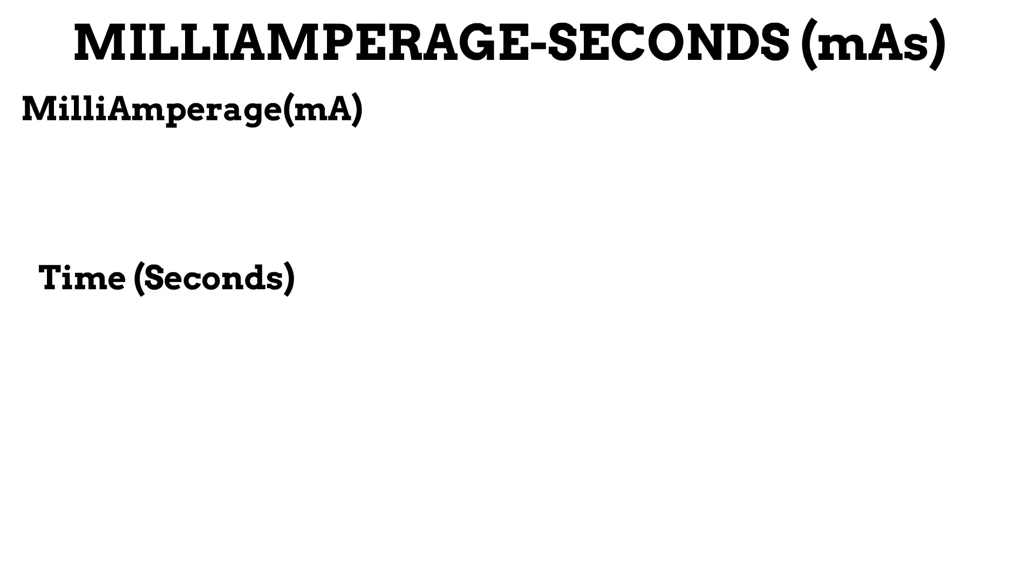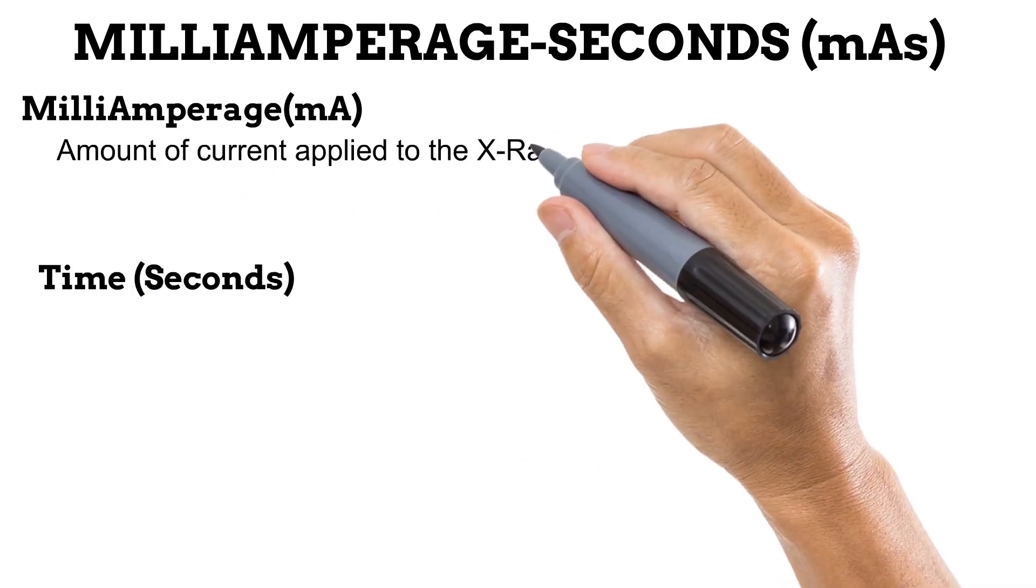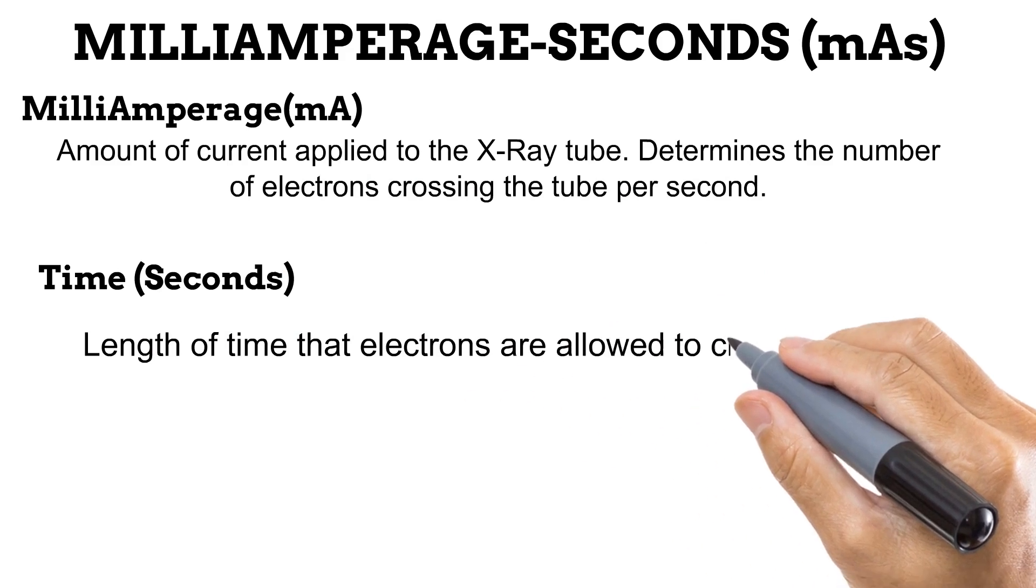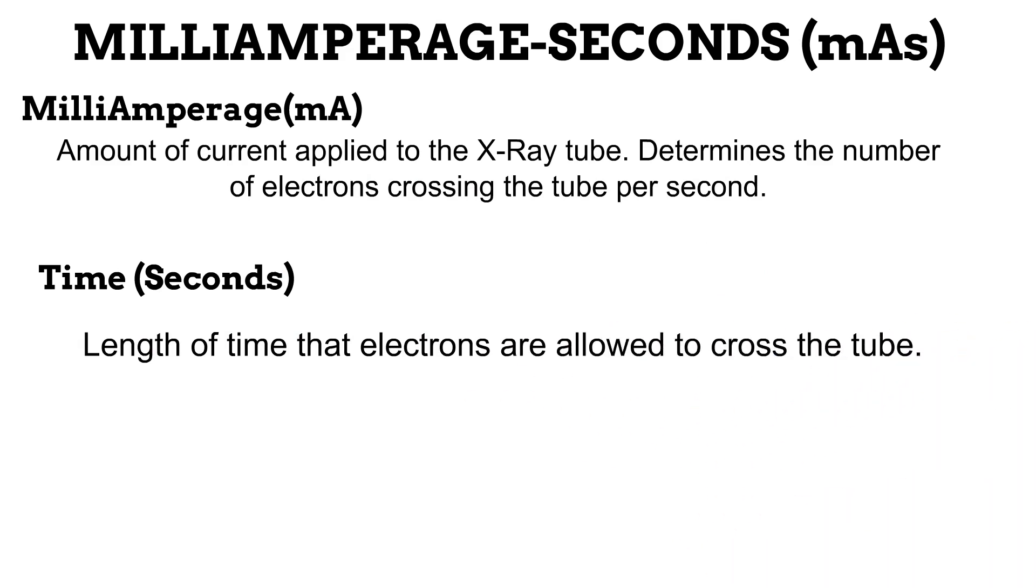First off, the milliamperage seconds, mAs. The milliamperage seconds is a combination of two factors, the milliamperage and the time in seconds. Because these two factors have the same effect on a radiographic image, they are usually combined as one factor. The milliamperage is the amount of current that is applied to the X-ray tube. It determines how many electrons cross the tube from cathode to anode for X-ray photon production. The time is the length of time in seconds that said number of electrons cross the tube for photon production.